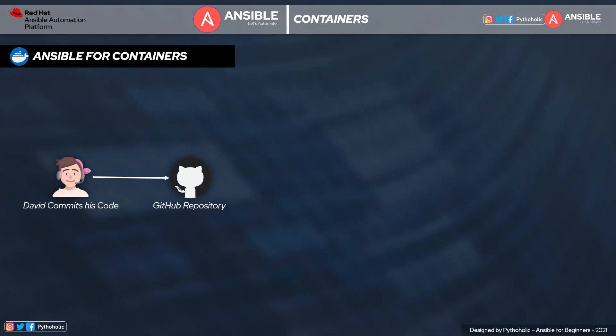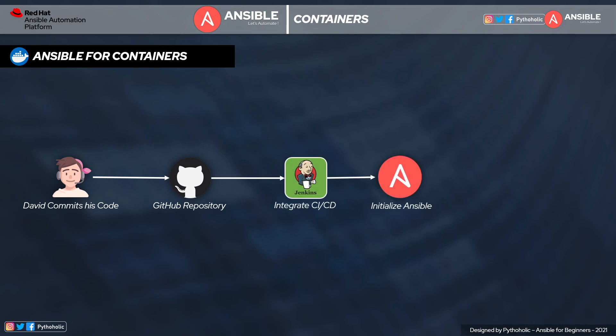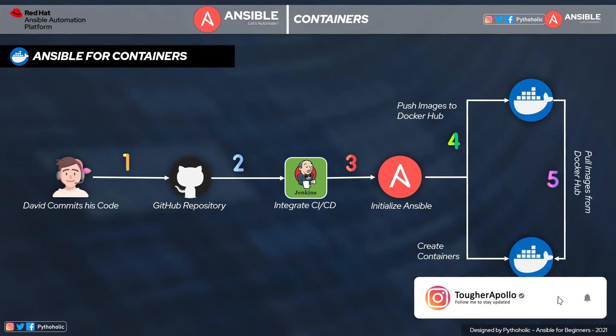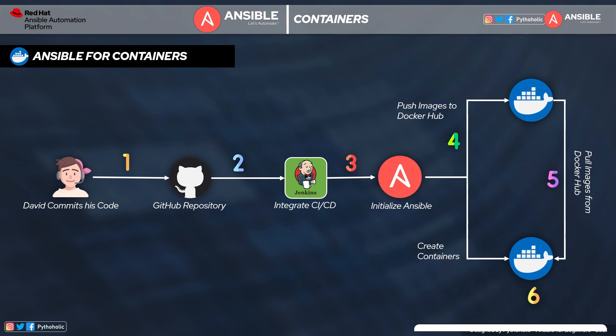Moving on to containers — if you are working with Docker in container-based application deployment, Ansible works with Docker as well. In an example of total application deployment with CI/CD in place: David commits his code changes to GitHub along with the playbook for Docker, which is fed into Jenkins as part of the CI/CD pipeline. Ansible then pushes the Docker image to Docker Hub for redundancy and creates the containers using the latest build. Ansible makes it very easy to manage the steps involved in container deployment.